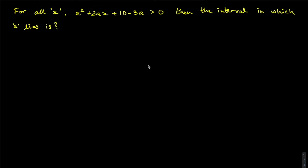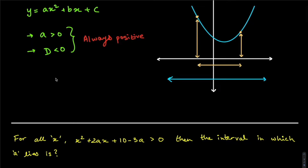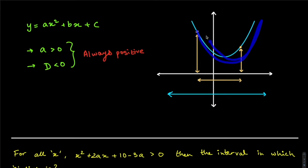The question says: for all x, x squared plus 2ax plus (10 minus 3a) is greater than zero. Find the interval in which a lies. This is based exactly on Case 1. We have a polynomial that is always greater than zero — exactly like this upward-facing parabola.